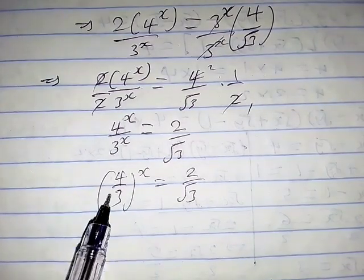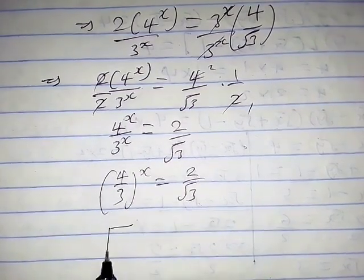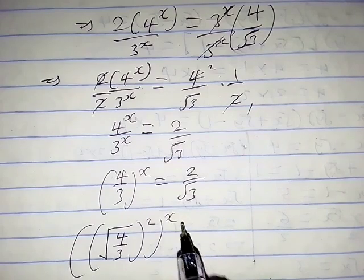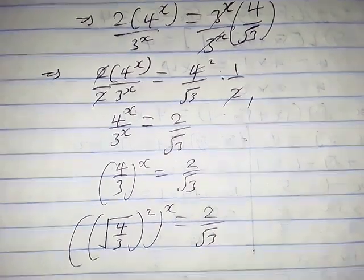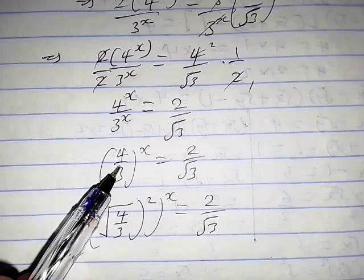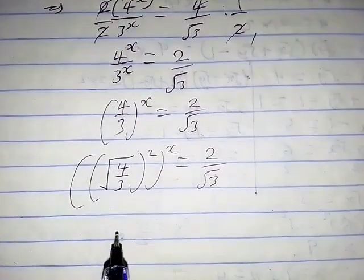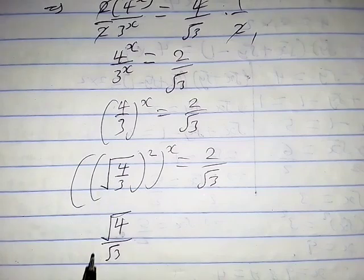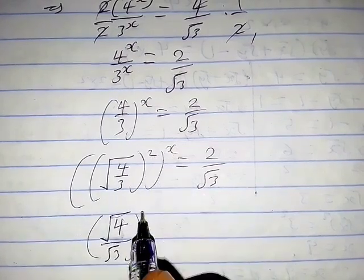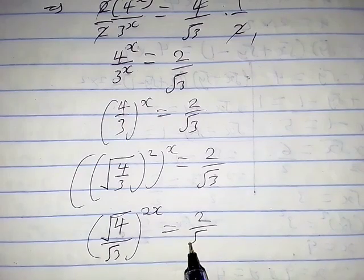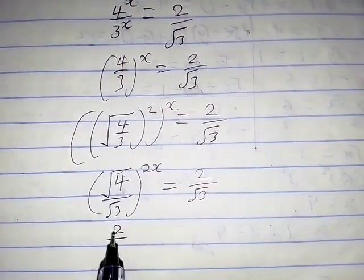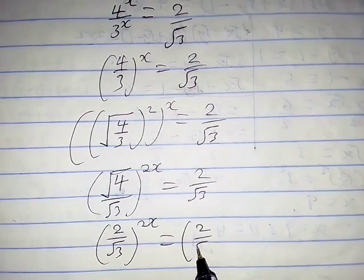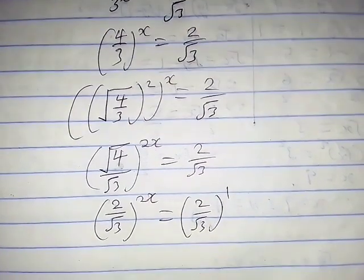Now let's consider 4 over 3. We can write it as square root of 4 over 3, all squared, and raise that to the power x, so we get square root of 4 over 3 raised to the power 2x. Since square root of 4 is 2 and square root of 3 stays, this equals 2 over square root of 3 raised to the power 2x, which equals 2 over square root of 3 raised to the power 1.